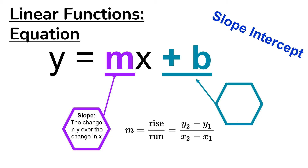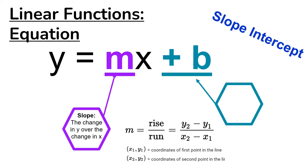With a graph you use rise over run, counting those spaces. If you have two ordered pairs, you plug in for x₁, y₁ and x₂, y₂ — where x₁ and y₁ are the coordinates for the first point and x₂ and y₂ are for the second point. The b stands for the y-intercept, which is where the graph crosses the y-axis.